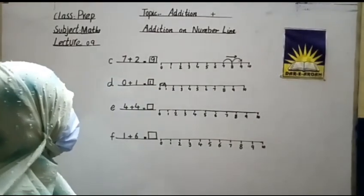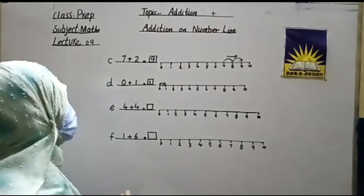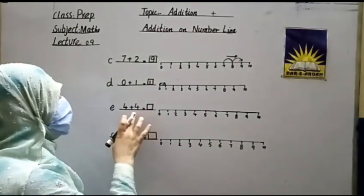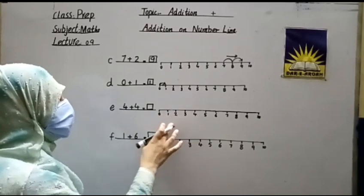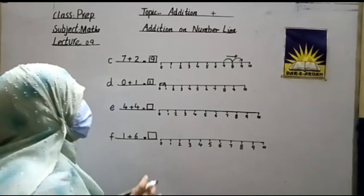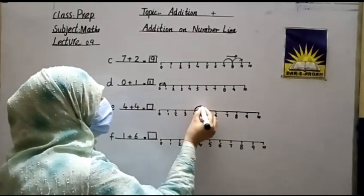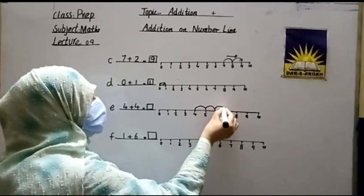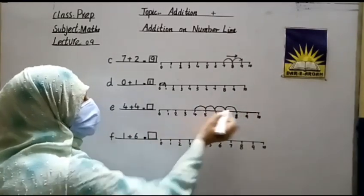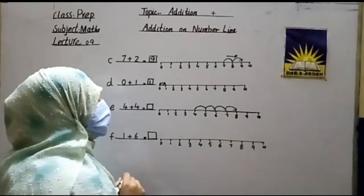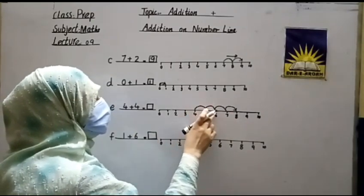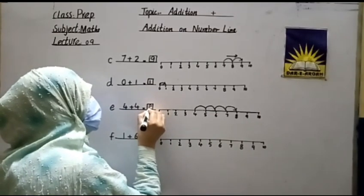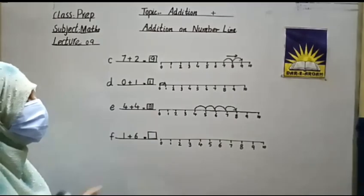Next question is four plus four. We solve this by using the number line and go left to right. Start at four and make four jumps: one, two, three, four. Look at the number below — it is eight. The answer is eight. All students write it and make the jumps on the number line.